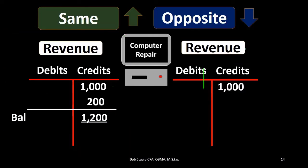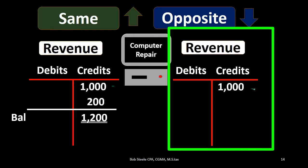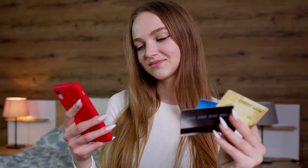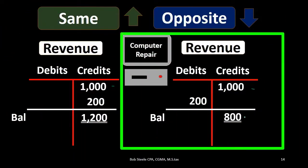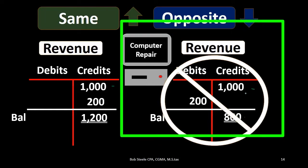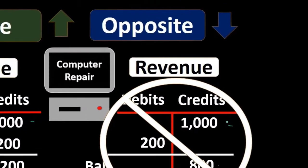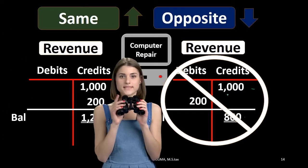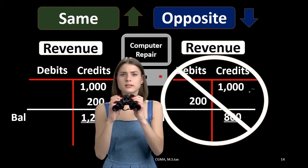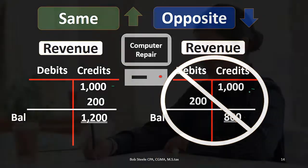If we were to make revenue go down, we would do the opposite — a debit — bringing the revenue account down to $800. Note that this doesn't typically happen; revenue will typically always go up. You might think of scenarios like a merchandise return, which would reverse revenue, but even then we typically make a separate account called Returns and Allowances rather than decreasing the revenue account directly. So, especially when starting out, 95–99% of the time revenue is only going to go up, and understanding that really helps when building journal entries.